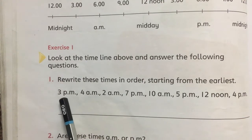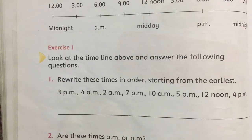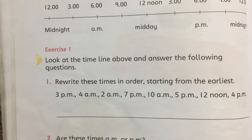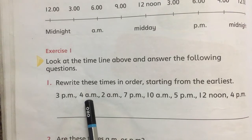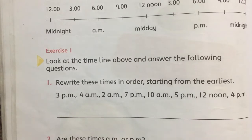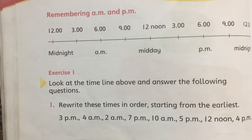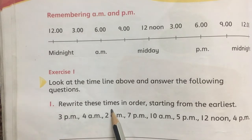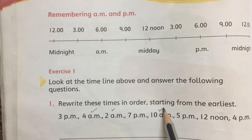The given times are 3 PM, 4 AM, 2 AM, and 10 AM. The AM times will come first and the PM times will come after. So from the AM times we have: 4 AM, 2 AM, and 10 AM. The earliest AM time is 2 AM, then 4 AM, then 10 AM.